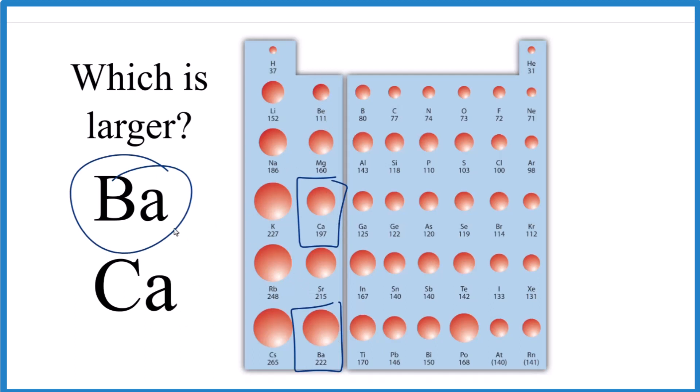This is Dr. B looking at which is larger, Ba or Ca. The answer: barium is larger than calcium because barium is further down in that group, group two. This is Dr. B. Thanks for watching.